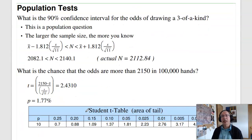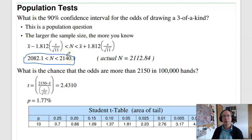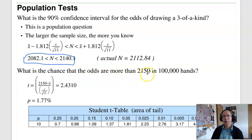For the population — what is the actual probability of being dealt three of a kind? I can't tell you precisely, but I can give a confidence interval. This is a population, so I divide by the square root of n. I need to go left and right 1.812 standard deviations, but now I divide the standard deviation by the square root of 11. This says the probability is somewhere between 2082 and 2140. We calculated it as actually 2112, so that seems consistent. The odds of getting more than 2150 three of a kinds in 100,000 hands: the distance to the mean in standard deviations gives a 1.7% chance that the actual probability of getting three of a kind is bigger than 2150.